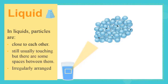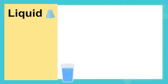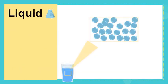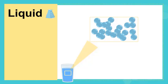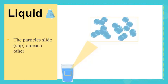Now what about the movement of liquid particles? The liquid particles slide over one another, and this is what gives the liquid its flowing property.